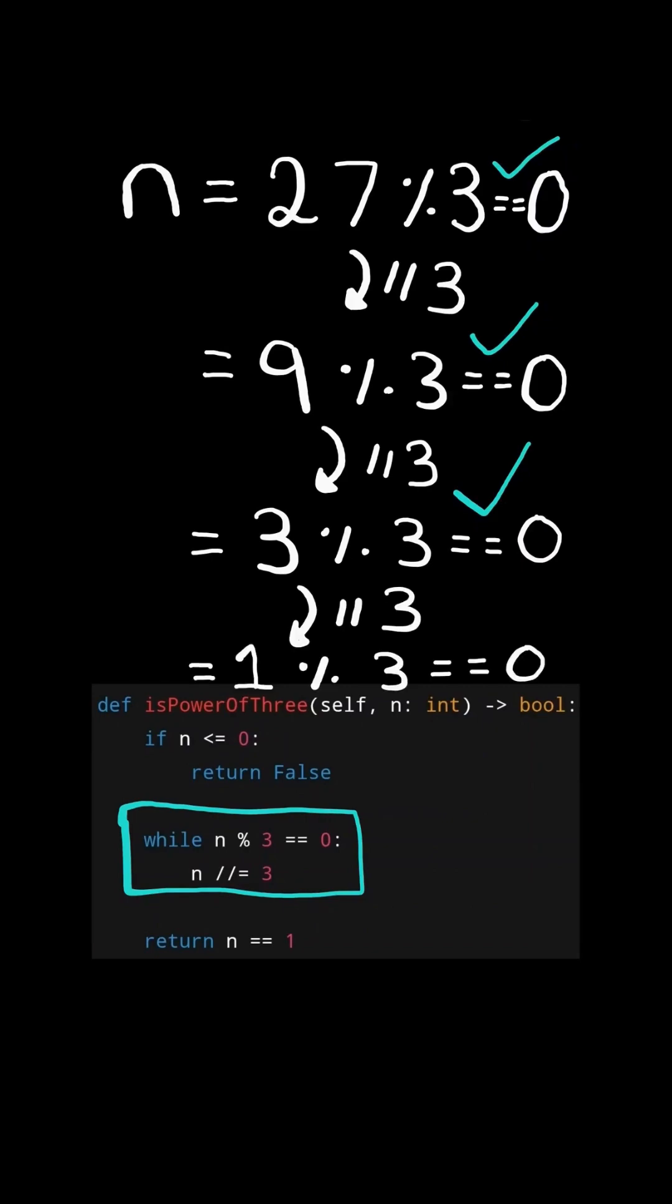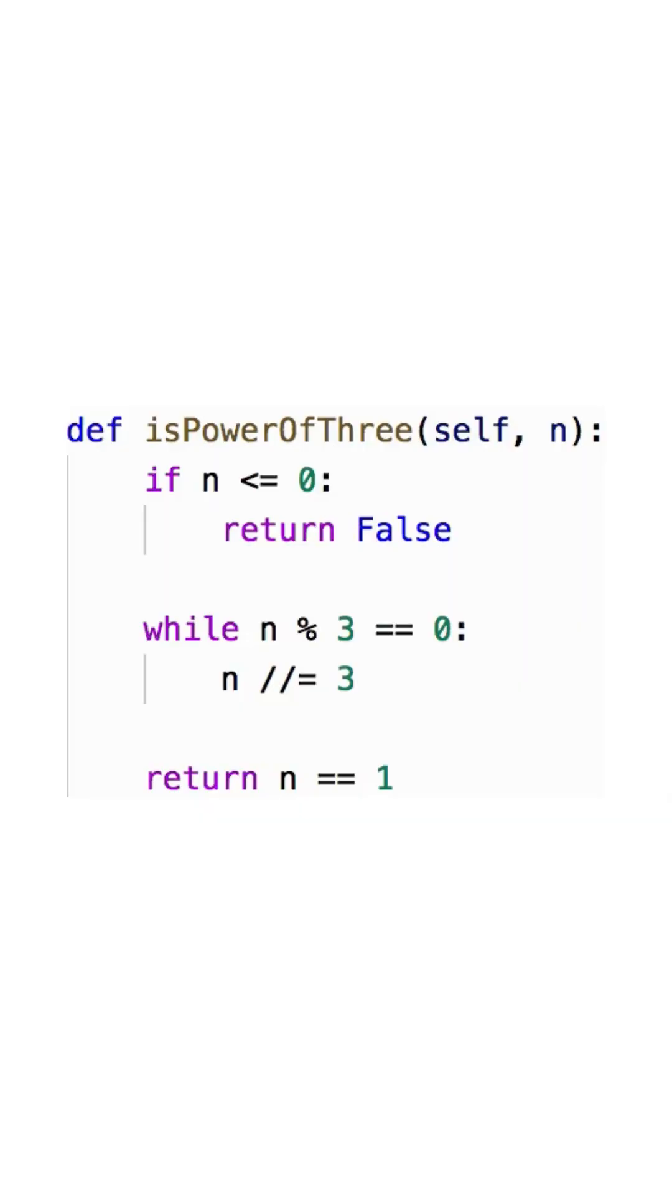We then check, is n divisible by 3? In this case, 1 is not divisible by 3, so then we stop the algorithm and exit the loop. And at the end, we check. If n happens to be equal to 1, then that means the original number was a power of 3. And here's the code to do so.